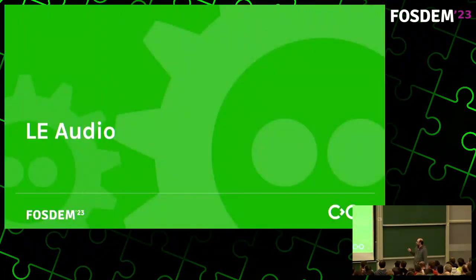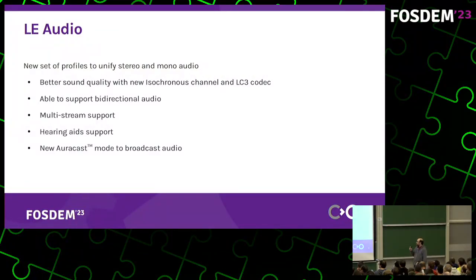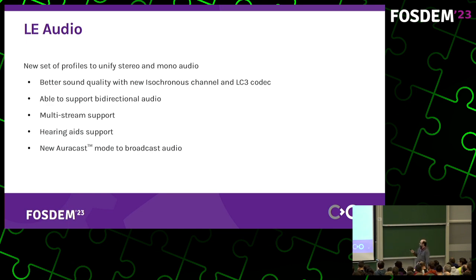Now we'll do a quick overview of the new LE Audio specifications. The idea is to unify the stereo and mono audio profiles and replace both A2DP and HFP. It has better sound quality with the new LC3 codec, and uses an isochronous radio channel to guarantee bandwidth and minimal delay. By default, it supports bidirectional audio for every usage, multi-stream support replacing true wireless, and also supports hearing aids. With the new Auracast mode, you can broadcast audio without interaction between the transmitter and receivers.